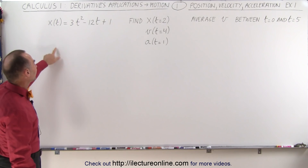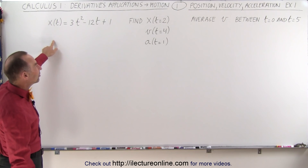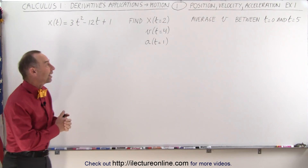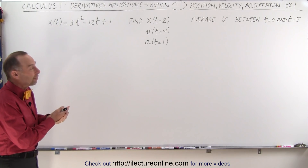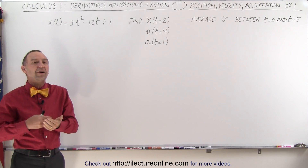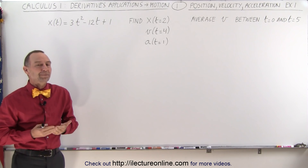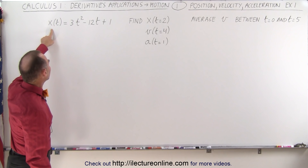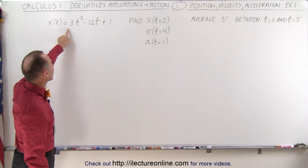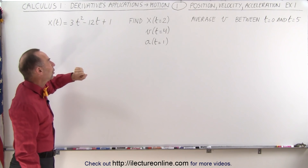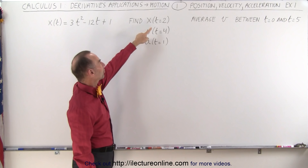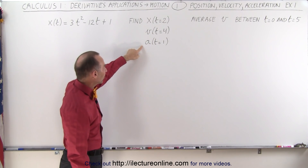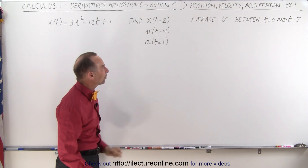It turns out that we can find the velocity of an object by taking the derivative of its position, and we find the acceleration of an object by taking the derivative of its velocity. So given an equation of the position of an object as a function of time, we should be able to find its position at some time, its velocity at some time, and its acceleration at some time.